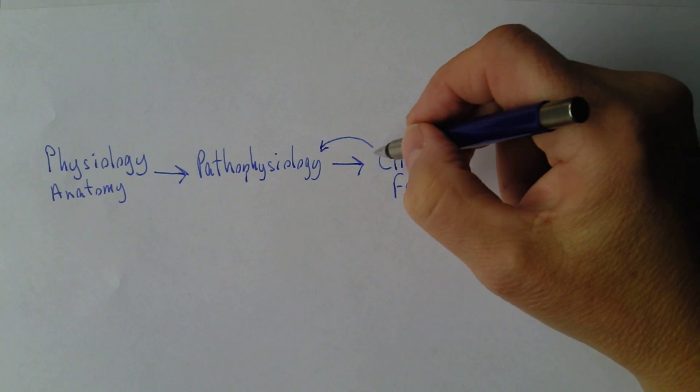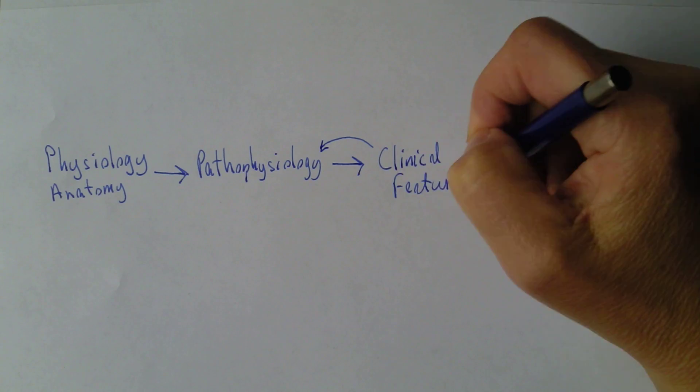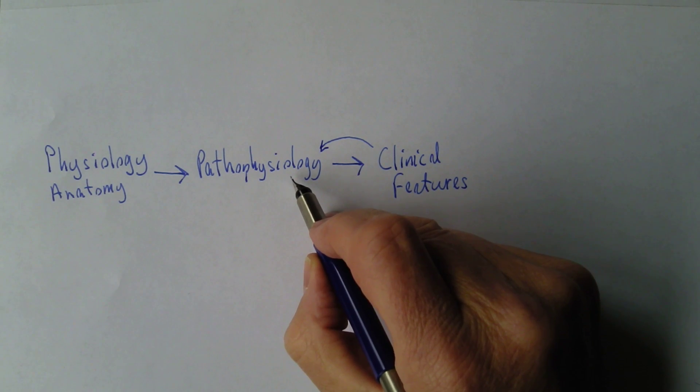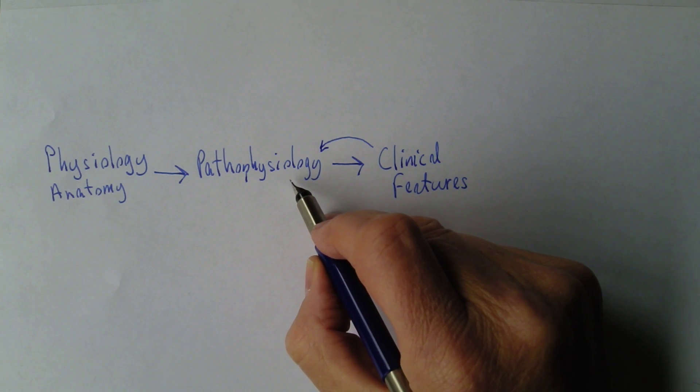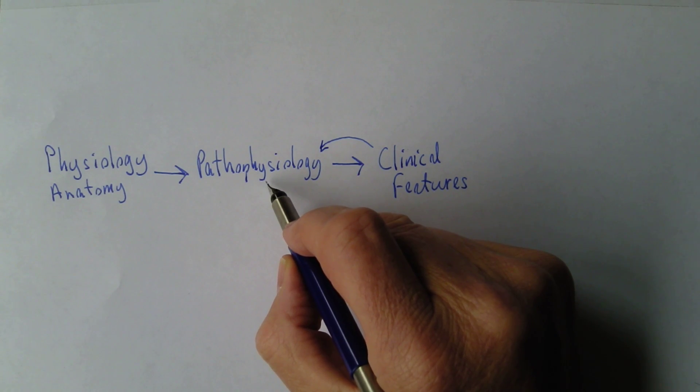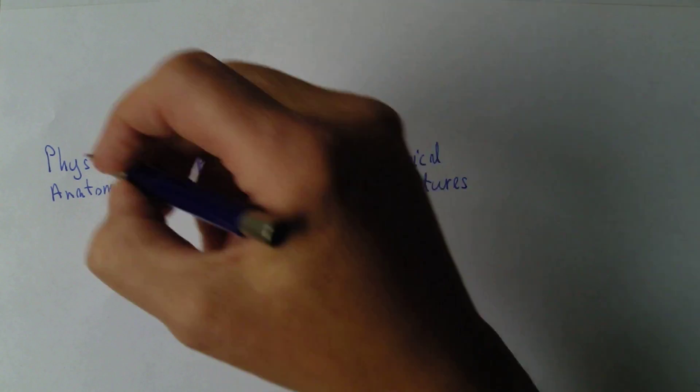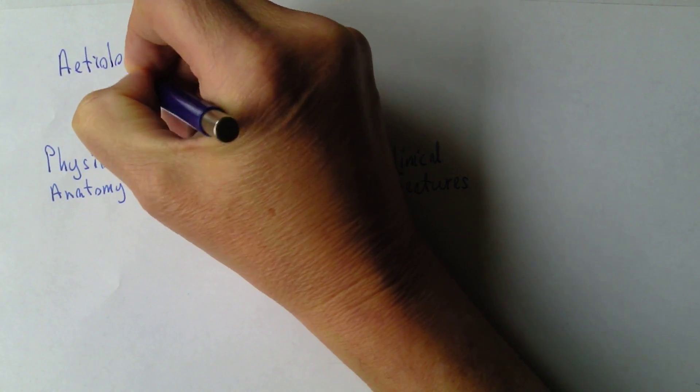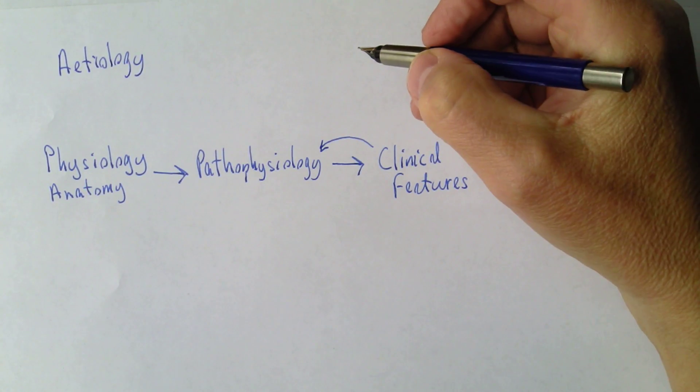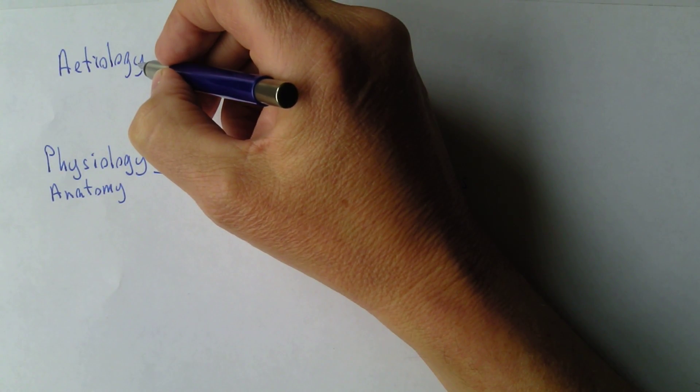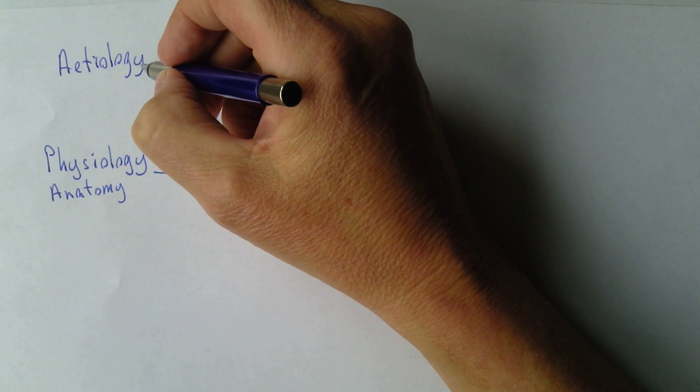So how do we know there's been a disruption to normal physiology? Because the clinical features will tell us there's been pathophysiological change. The clinical features inform us about the change. As healthcare providers we need to recognize and interpret clinical features, deducing that specific pathophysiological changes have taken place. But why does physiology change into pathophysiology in the first place? Well the answer to this is etiology. Etiology is that which causes, the study of causality.